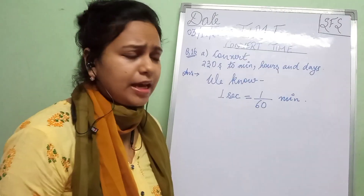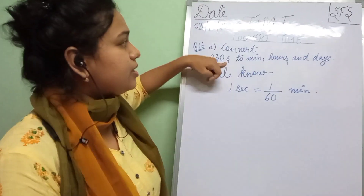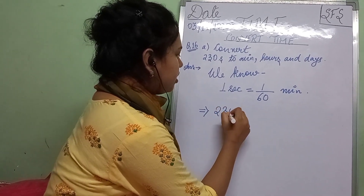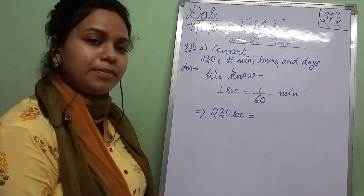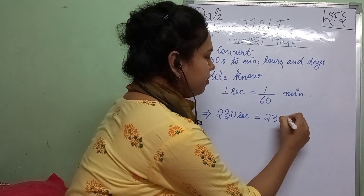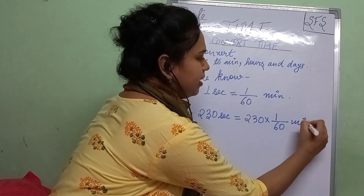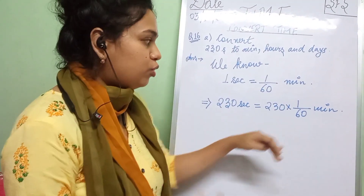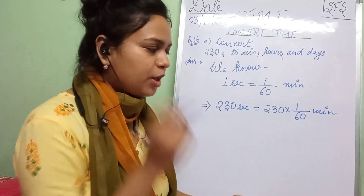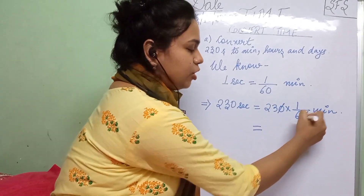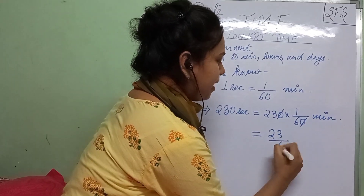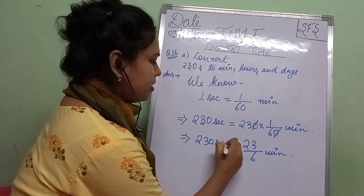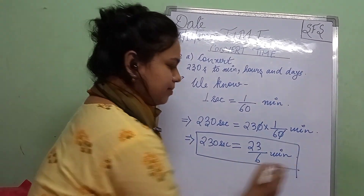Now, what do you have at hand? You have to convert 230 seconds into minutes, hours and days. So 230 seconds will be equal to 230 into 1 by 60 minutes. Second is a smaller unit of time, minutes is a larger unit of time, so we divide 230 by 60. You can cancel out the zeros — you are left with 23 by 6 minutes. So 230 seconds is equal to 23 by 6 minutes.